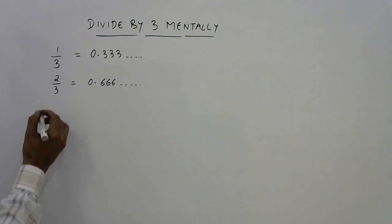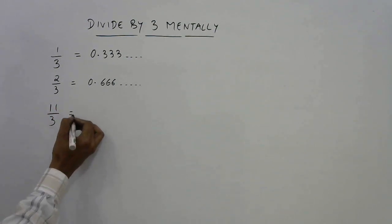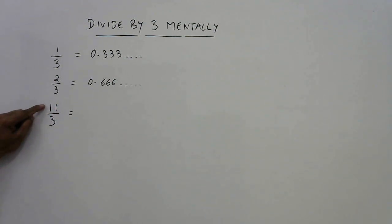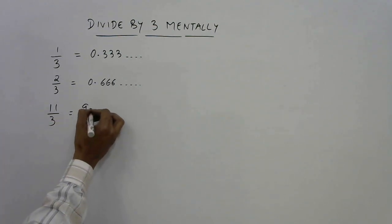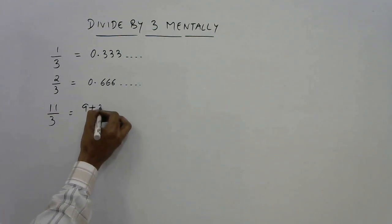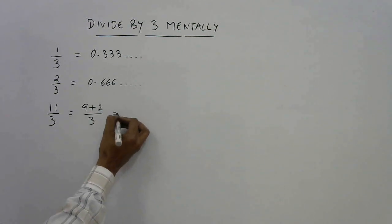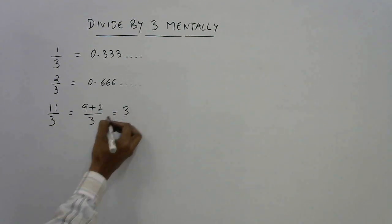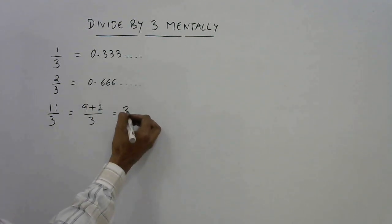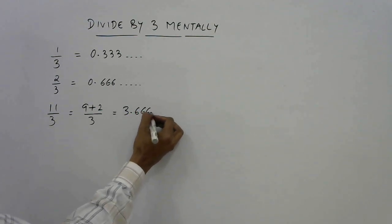Suppose I take the example of 11 by 3. Now see, 11 is not a perfect multiple of 3. So what is the preceding number which is a multiple of 3? Before 11 we have 10 which is again not divisible by 3. Before that we have 9. So just write 11 as 9 plus 2 by 3. 9 by 3 is 3 and 2 by 3 is 0.666, so just put 0.666 and you get your answer.